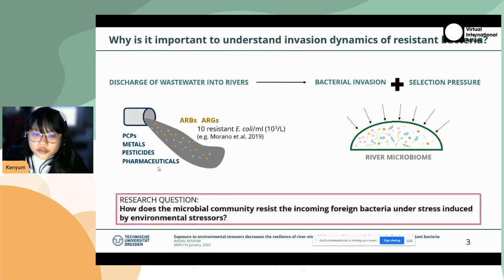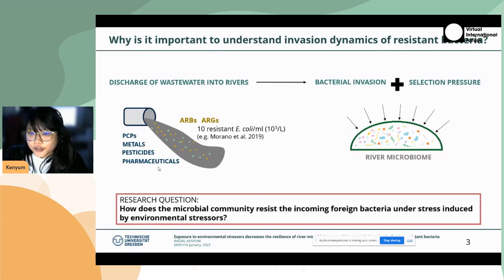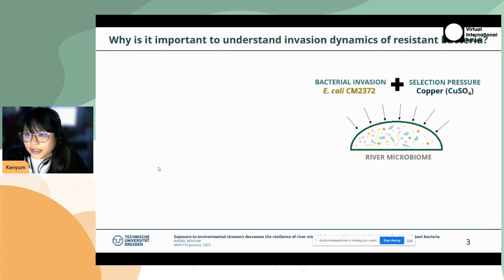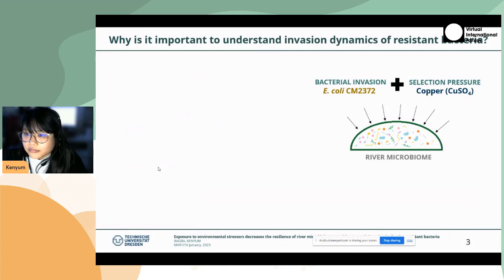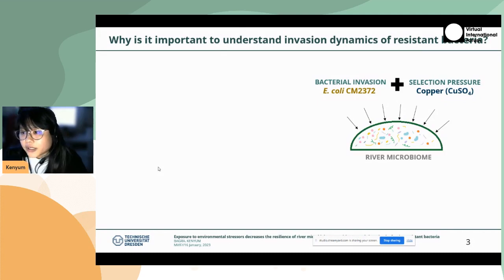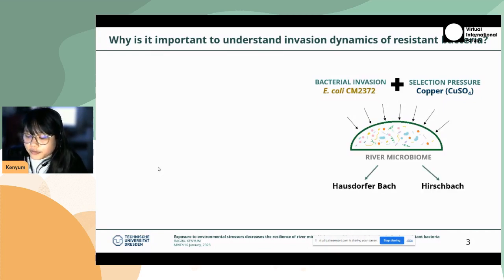Our research question is: how does the microbial community resist incoming foreign bacteria under stress induced by environmental stressors? To study this, we used E. coli CM2372 — a special lab-scarred E. coli not found in the environment — as the bacterial invader, and we used copper as a proxy for inserting selection pressure on the river microbiome of two different rivers in Dresden, Germany: Hausdorferbach and Hirschbach.